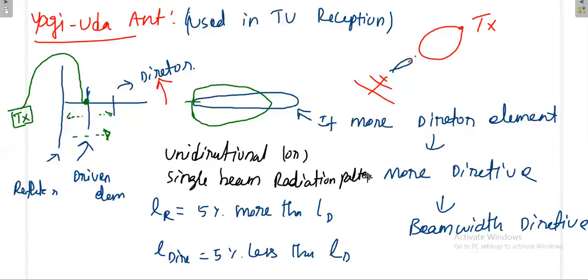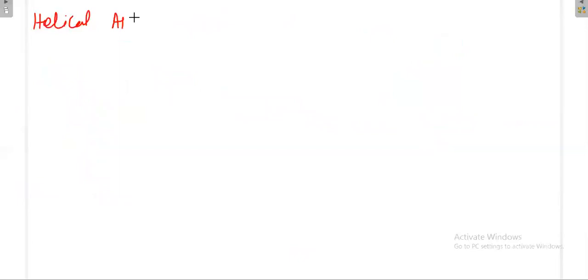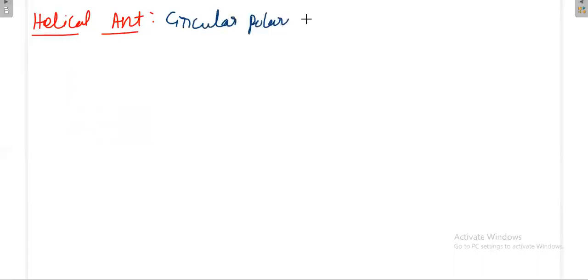Next we go to the helical antenna — only the important points from an exam point of view. The main important feature of the helical antenna is circular polarization — it produces circularly polarized waves. It is used in satellite communication and satellite tracking.